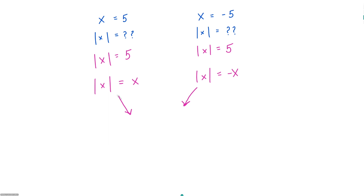When is the absolute value of x equal to x, and when is it equal to negative x? The absolute value of x is equal to x when x is greater than or equal to zero. And absolute value of x is equal to negative x when x is less than zero. This is where people's heads start spinning a bit. With absolute value, I try to steer away from the terms positive and negative, and say greater than zero or less than zero. But if I can make these two translations, I can get rid of my absolute value signs and solve for my variable using simple algebra.